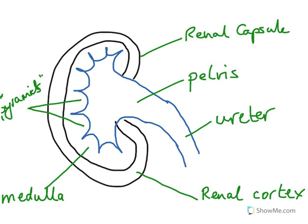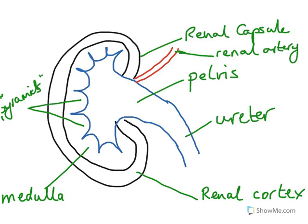One thing we haven't mentioned yet is the blood flow into the kidney. Blood flow comes in via an artery — and seeing as we're talking about the kidney, it's the renal artery. That brings oxygenated blood, but also blood that contains urea, salts, and water, which to some extent are going to be taken out of the blood. The urea is going to be completely filtered out by the kidney from the blood of the renal artery, and some of the water and some of the salts are also going to be removed.